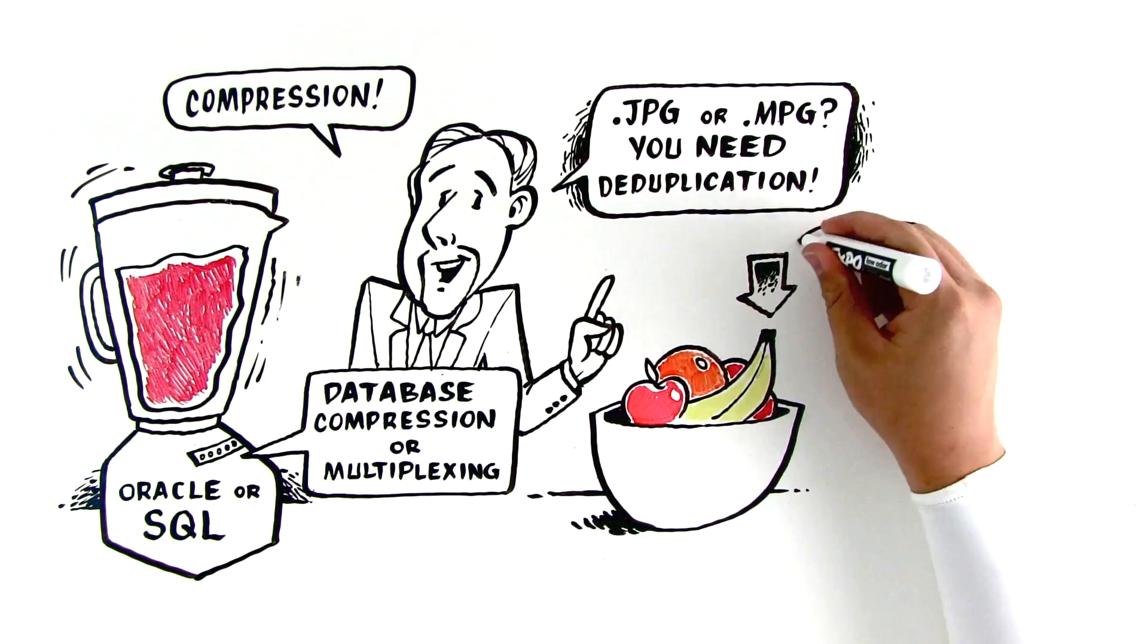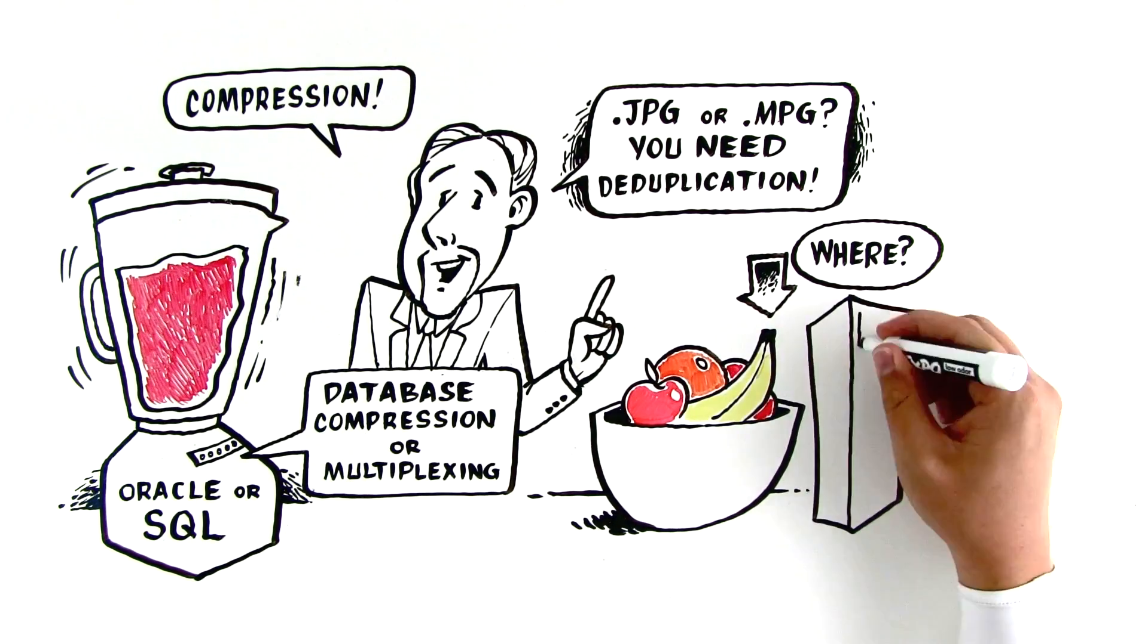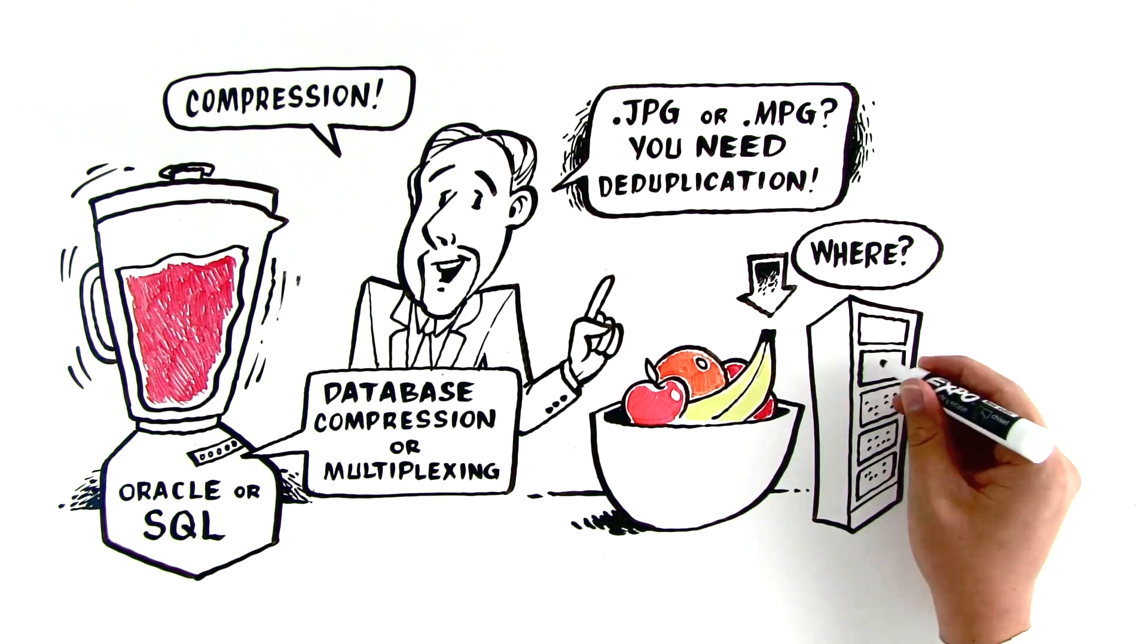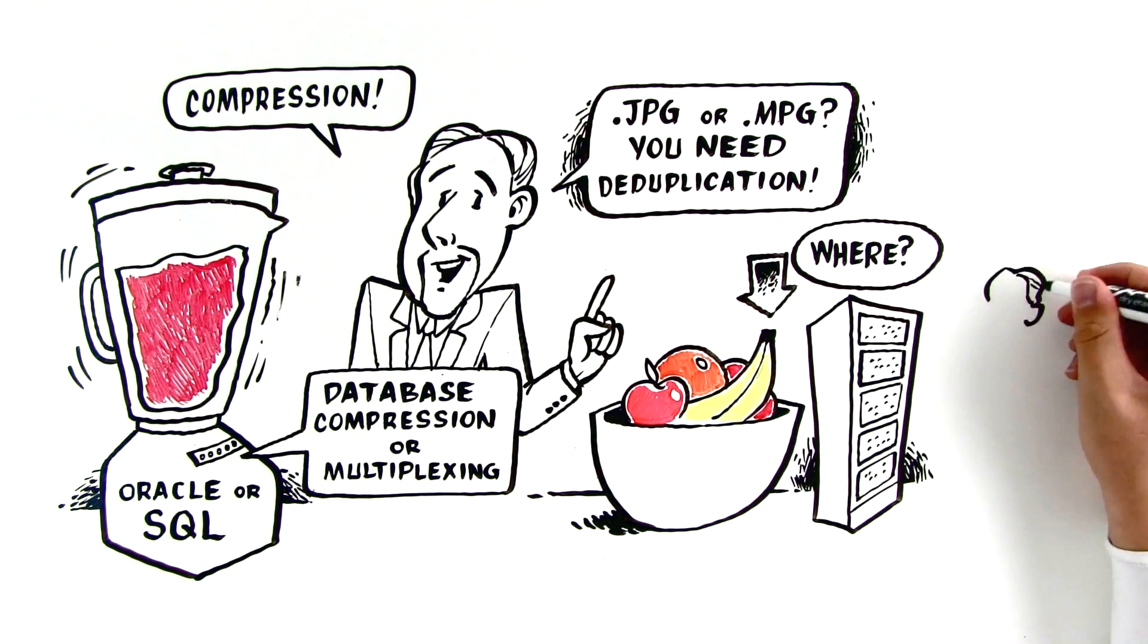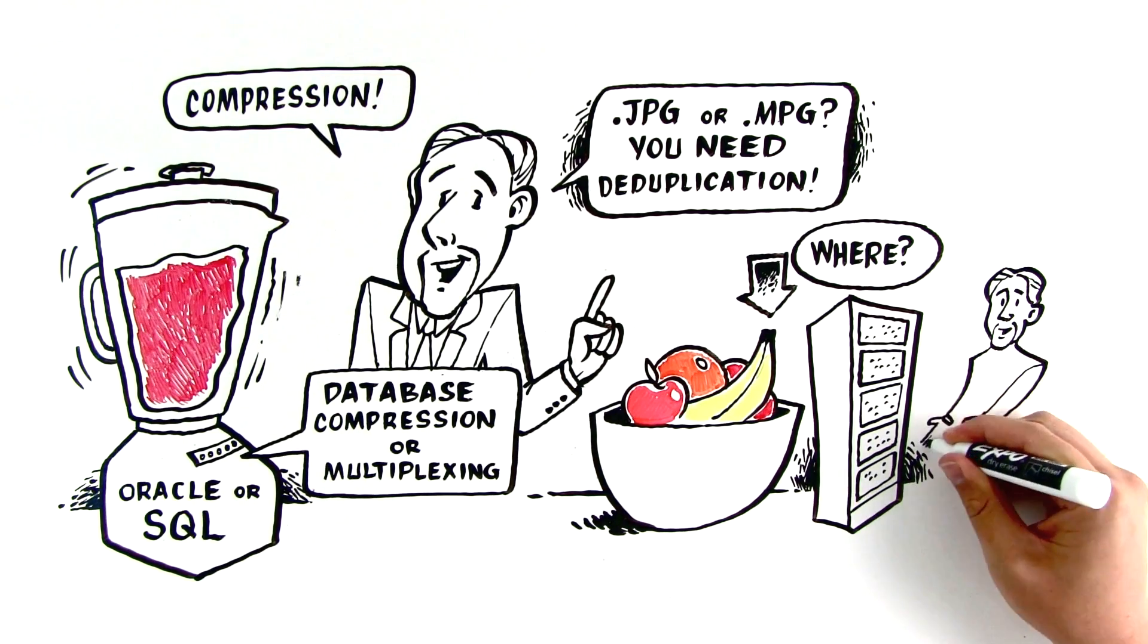Third, where will you deploy? Host server? Backup server? Storage system levels? This makes a big difference in the capacity reduction achieved and impacts performance.